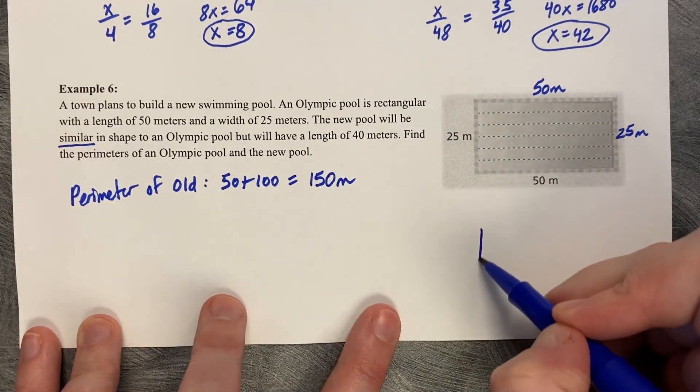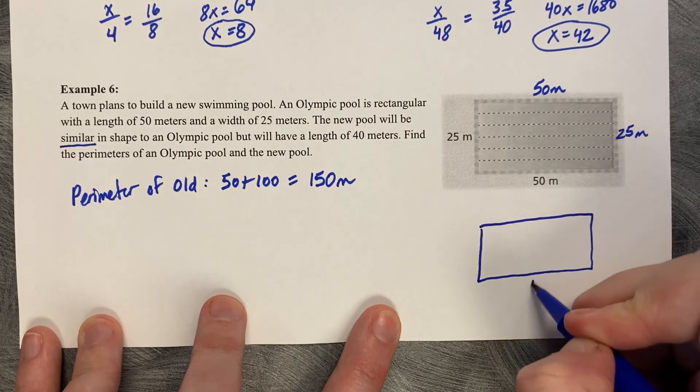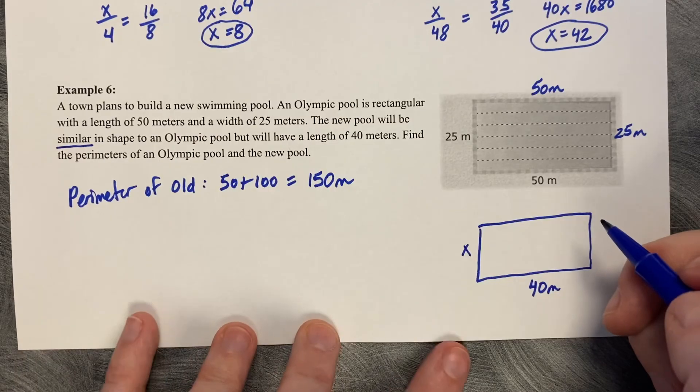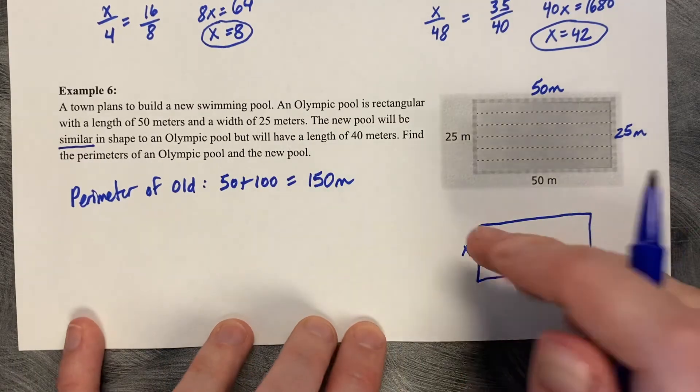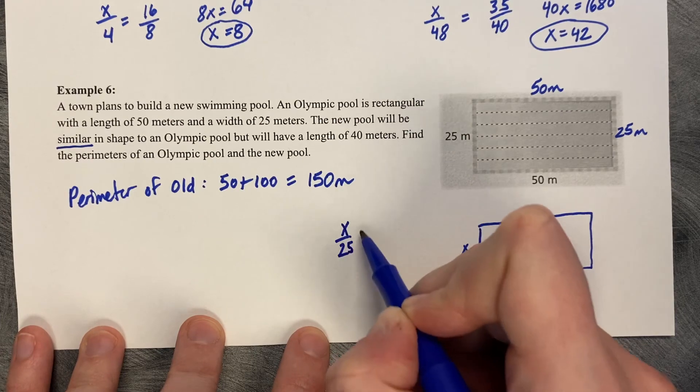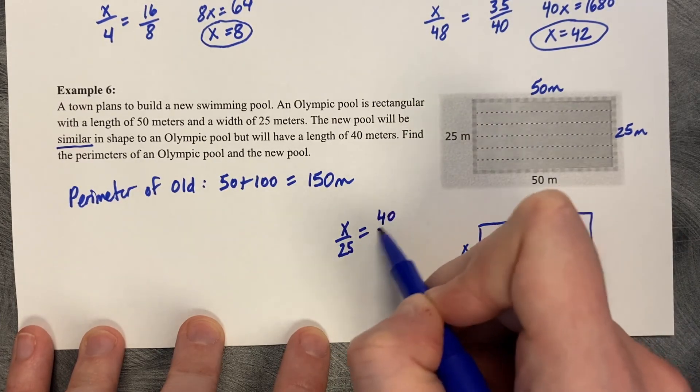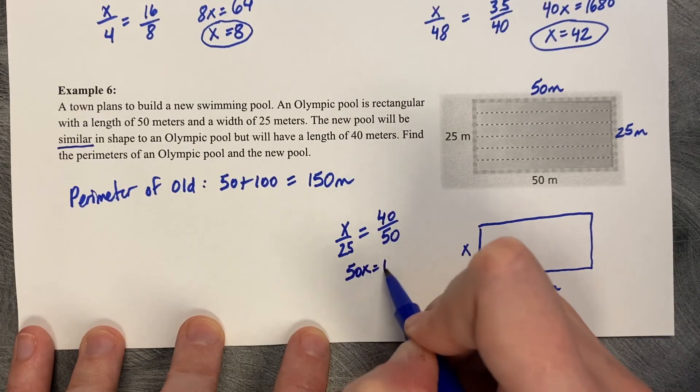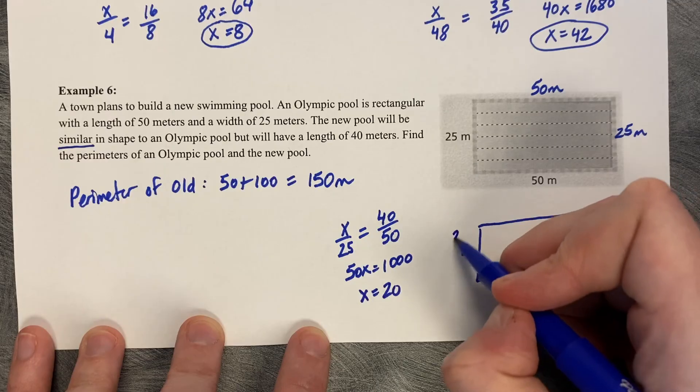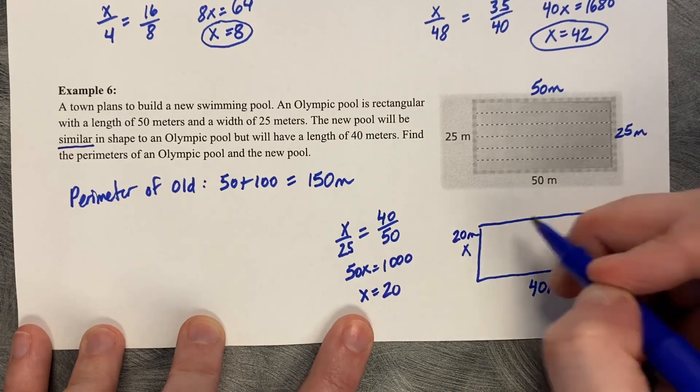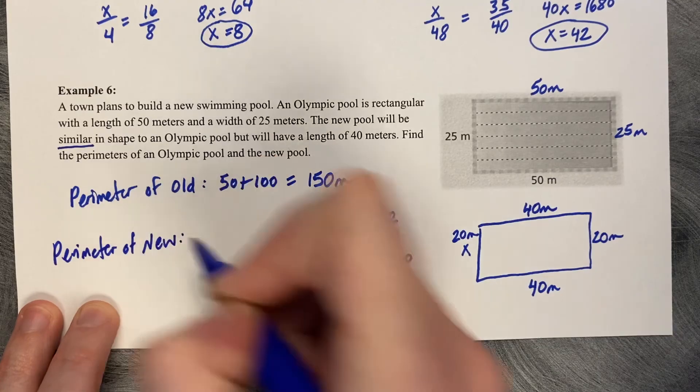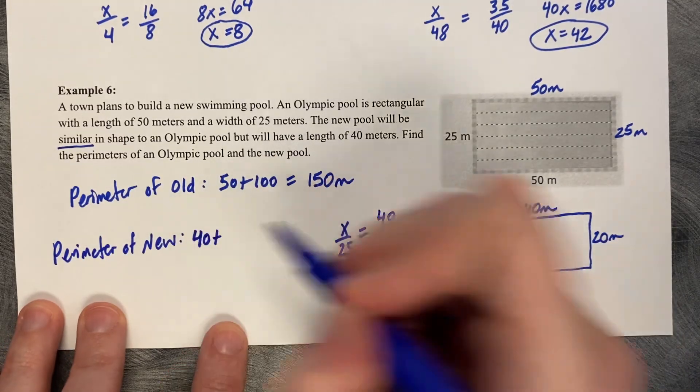So now we can draw a little sketch of our new one. It's going to be similar in shape, but instead it's going to be 40 meters long. But I'm not exactly sure how long the width is to help us get this perimeter. So these two figures are similar to each other, so we can set up a proportion to figure out what the new length will be. So X is compared to 25 as 40 is to 50. 50X equals 1000. Divide by 50 and X equals 20. So this new length is 20 meters. So we've got a 20 and a 20 and a 40 and a 40. So our perimeter of new, 20 and 20 is 40, 40 and 40 is 80, 40 and 80 is 120 meters.